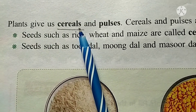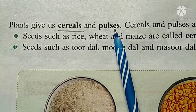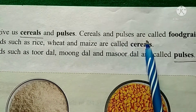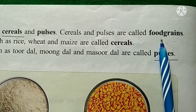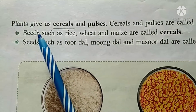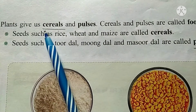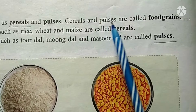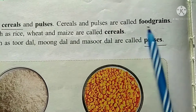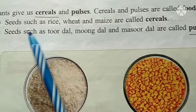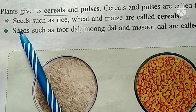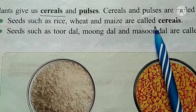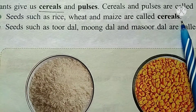Plants give us cereals and pulses. Cereals and pulses are called food grains. Seeds such as rice, wheat and maize are called cereals.